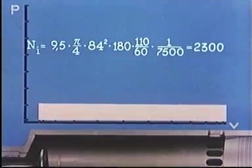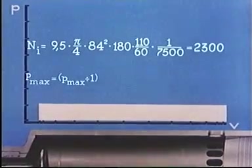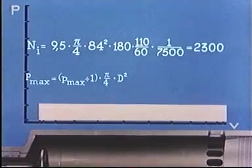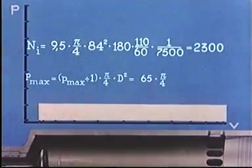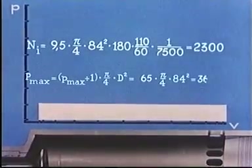The largest force acting on the piston is the highest combustion pressure, less the atmospheric pressure on the underside of the piston, multiplied by the piston area, or 65 multiplied by PI over 4 multiplied by 84 squared, that is 360,000 kilograms.